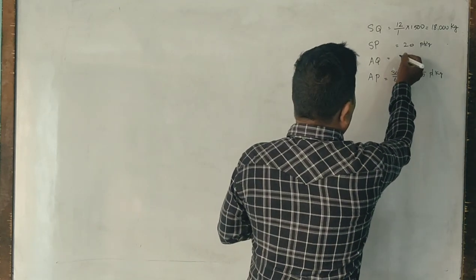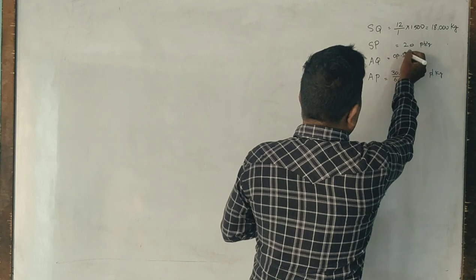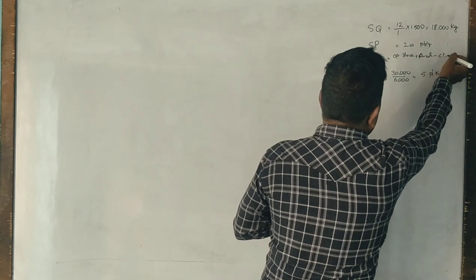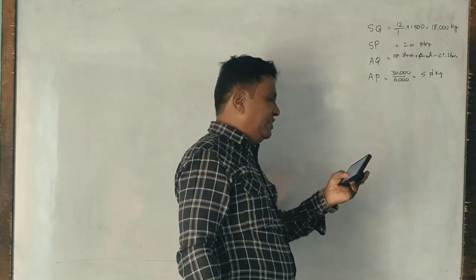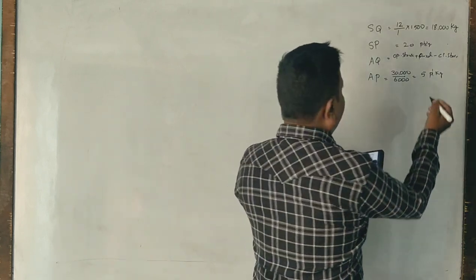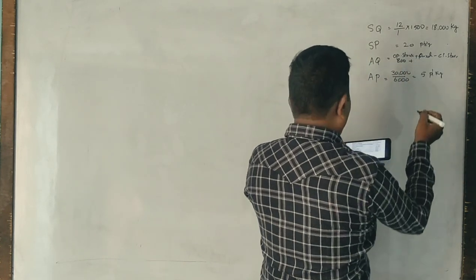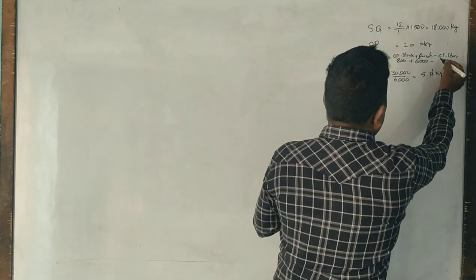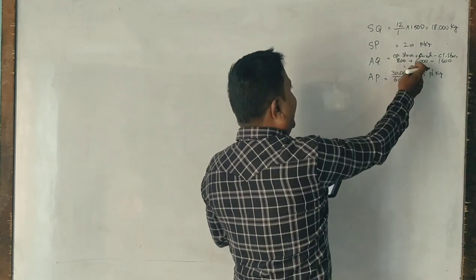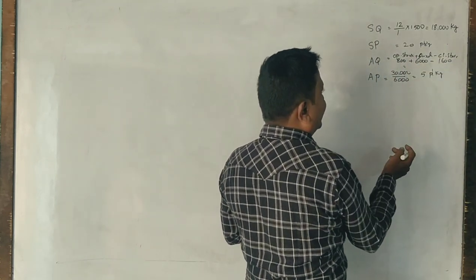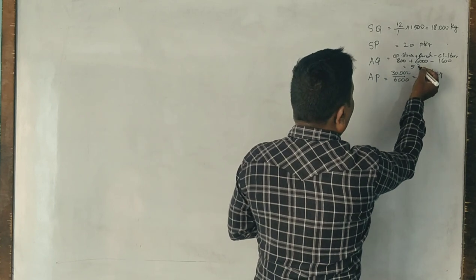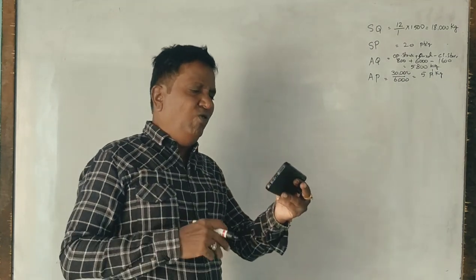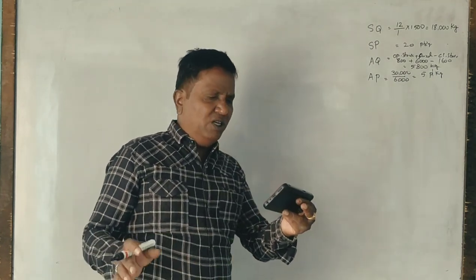Now we have to understand what is the actual quantity. When you want to find out actual quantity, we have a formula called opening stock plus purchases minus closing stock. What is the opening stock of raw material? 800 kg. Materials purchased is 6,000 kg. What is the closing stock? 1,600 kg.